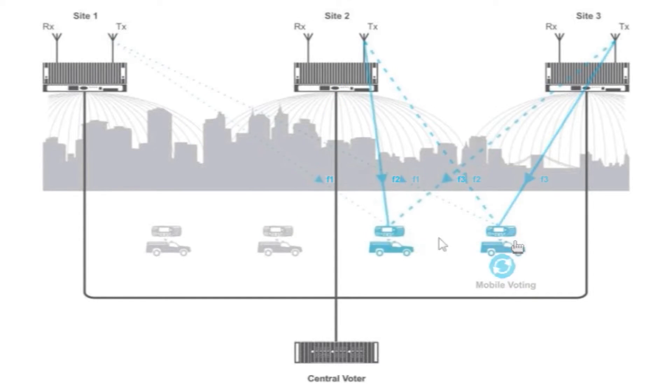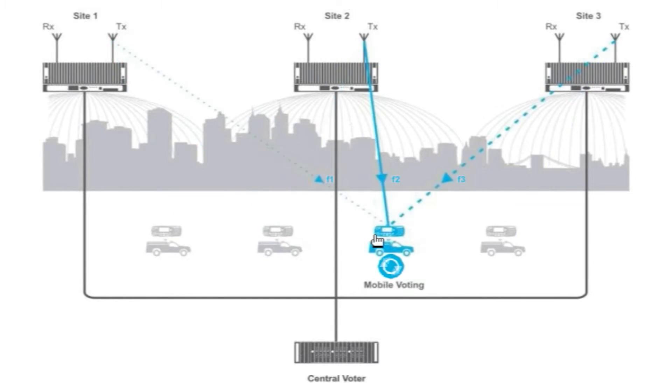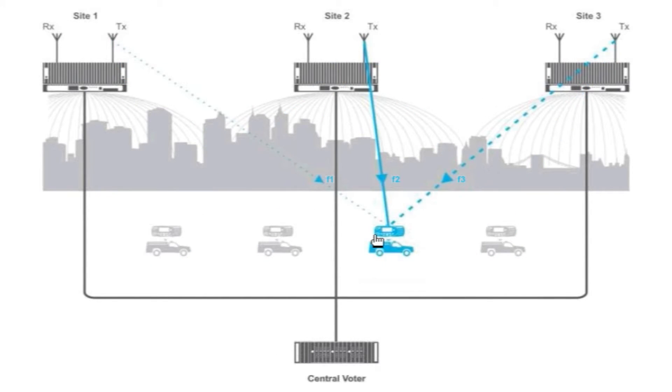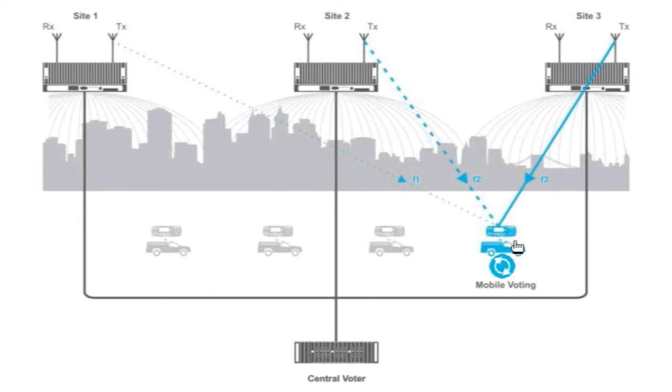Suppose a system has a number of different repeaters at different sites, all transmitting the same audio, the same signal, and a user moves from one of these sites where the reception is great and the signal is strong to another site. Eventually, you will experience reception which is better at the second site than at the original first site.